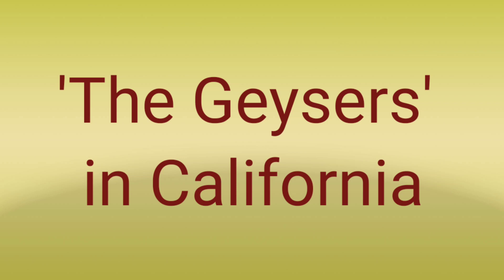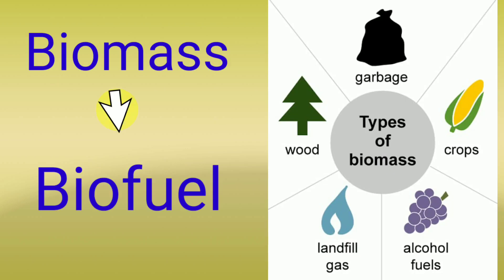Do you know the Geysers in California are a geothermal energy plant with an installed capacity of 1.5 gigawatts? Biomass is plant or animal material used as fuel to produce electricity or heat. Biofuels can be obtained from small wooden pellets, energy crops like corn, sugar canes, and bamboo, sewage sludge, cow dung, and landfill gas.